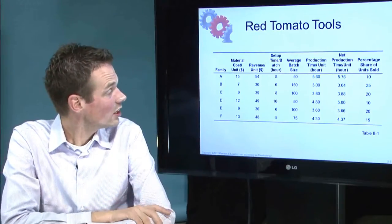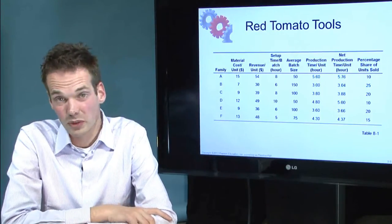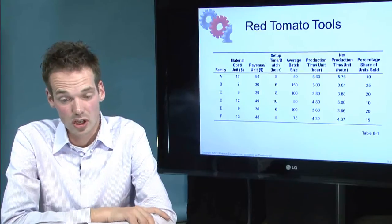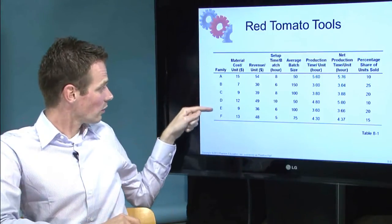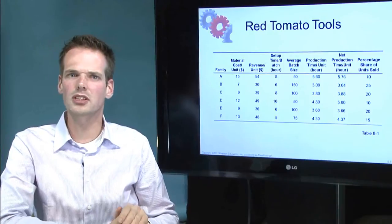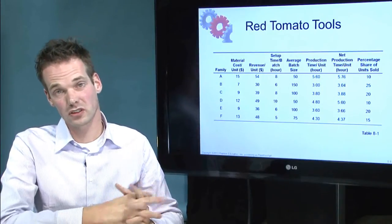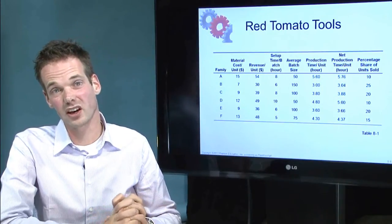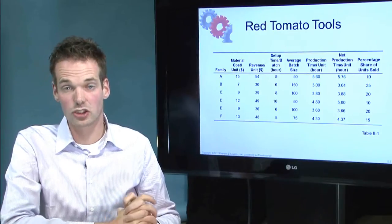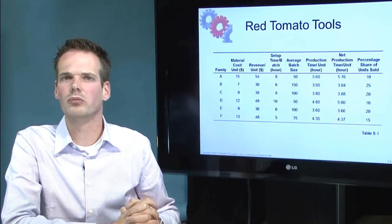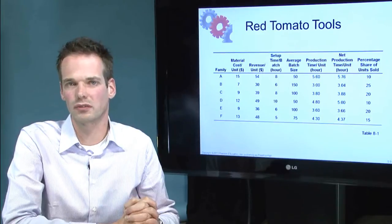Here with Red Tomato Tools we have one, two, three, four, five, six product families. As discussed earlier, it is better not to plan on stock keeping units; it is better to plan on product families because that reduces flexibility requirements.